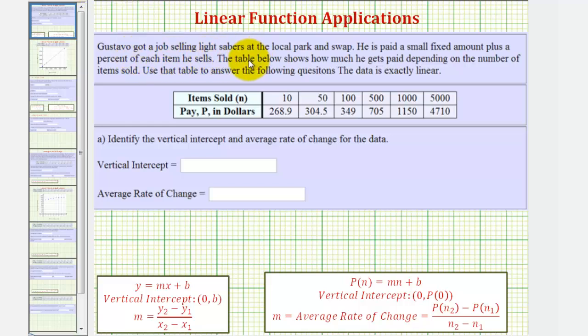Gustavo got a job selling lightsabers at a local park and swap. He is paid a small fixed amount plus a percent of each item he sells. The table below shows how much he gets paid depending on the number of items sold. Use the table to answer the following questions. We're told that the data is exactly linear.